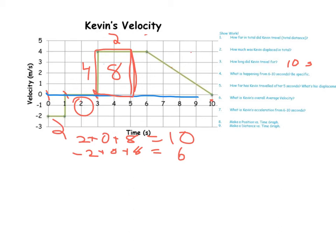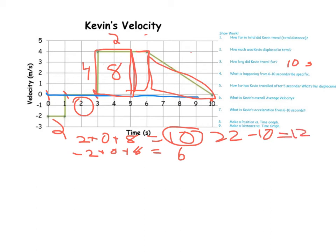If the question said after five seconds, I would simply find the areas of the remaining intervals and add those up. Or I could do: total distance twenty-two minus ten equals twelve, and total displacement eighteen minus six equals twelve. Both are positive. Anyway, that was number five.